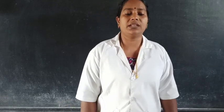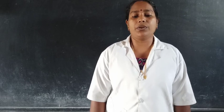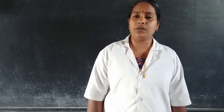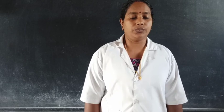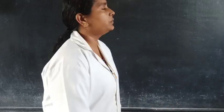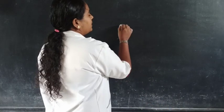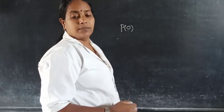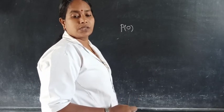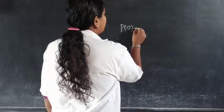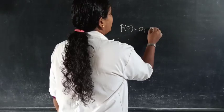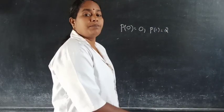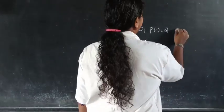Second degree polynomial with p(0) = 0, p(1) = 2, p(2) = 6. So the conditions are: p(0) = 0, p(1) = 2, and the third condition p(2) = 6.